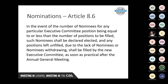In the event that the number of nominees for any executive committee position is equal to or less than the number of positions to be filled, such nominees should be declared elected and unfilled positions shall be filled by the new executive as soon as practical after the AGM. For example, if the chairperson decides not to seek re-election and chairs the meeting to the end of the AGM, the remaining elected executive members call a meeting and appoint someone to find a new chairperson.